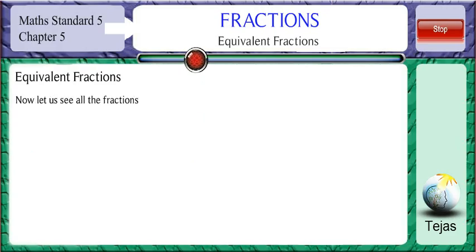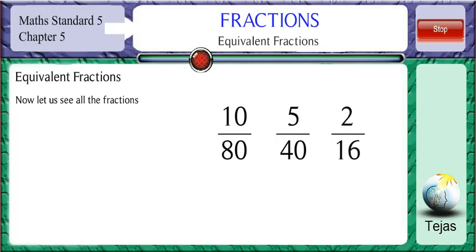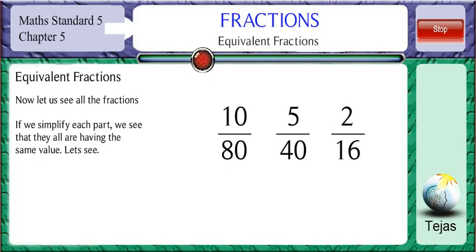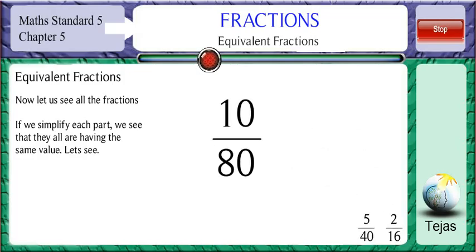Now let us see all the fractions: 10 by 80, 5 by 40, and 2 by 16. If we simplify each part, we see that they are all having the same value. Let us see 10 by 80.